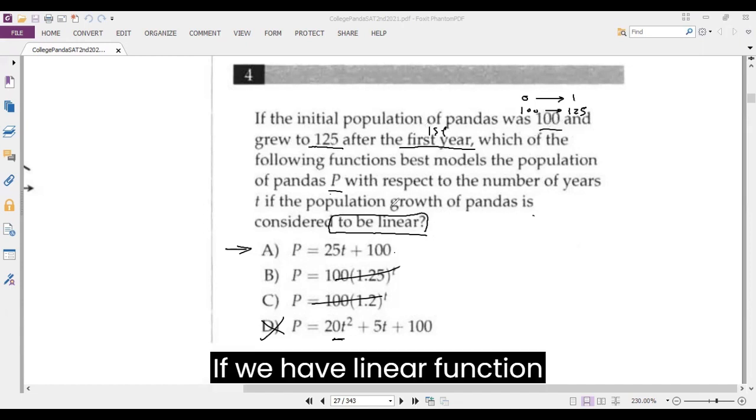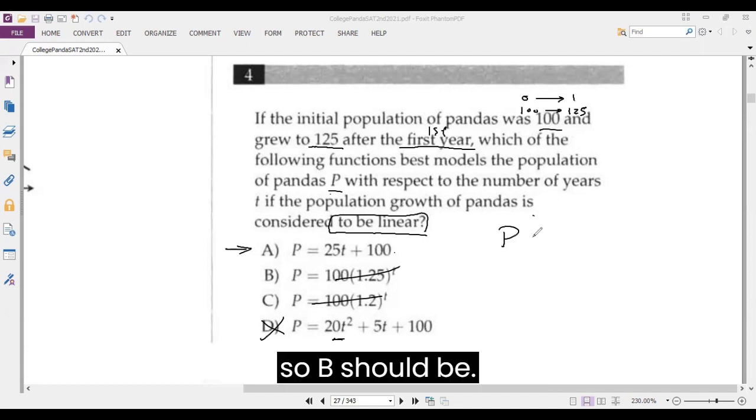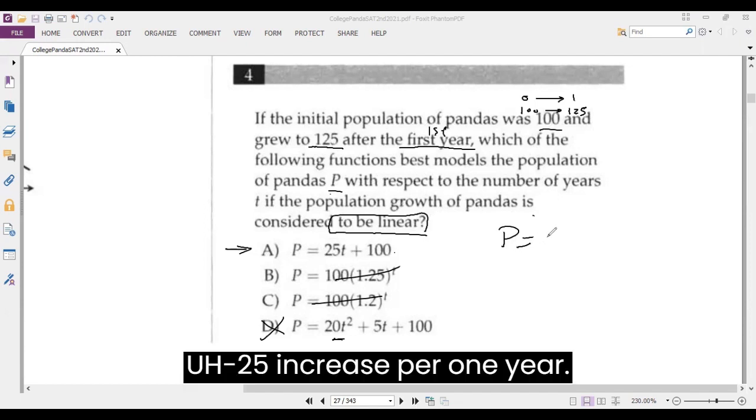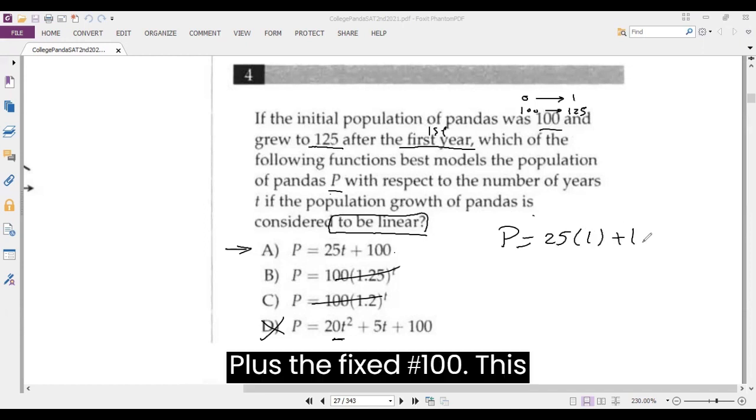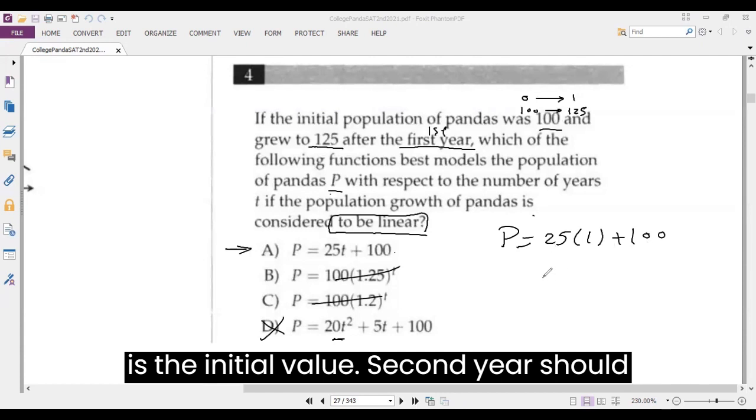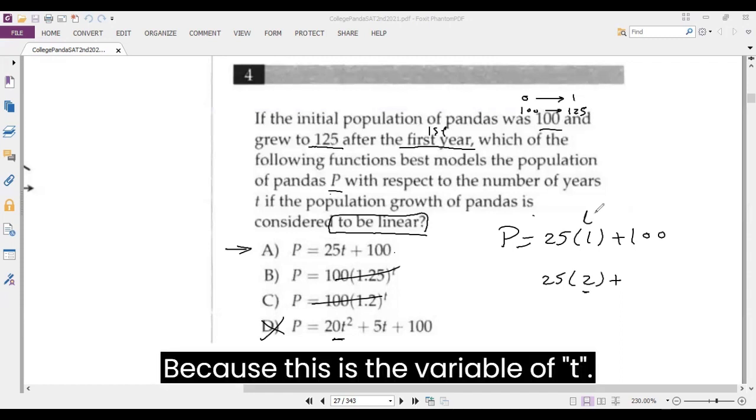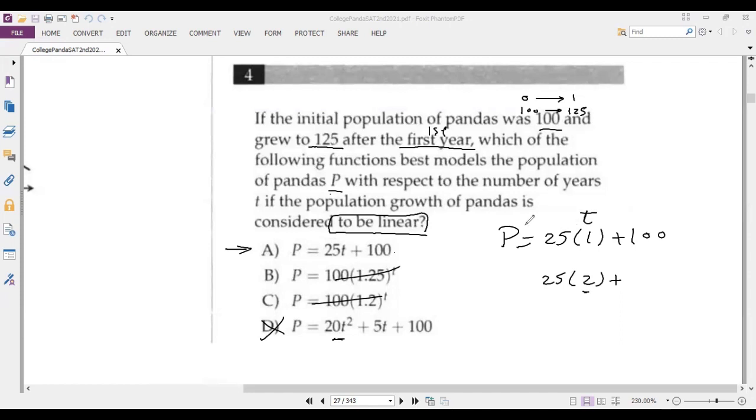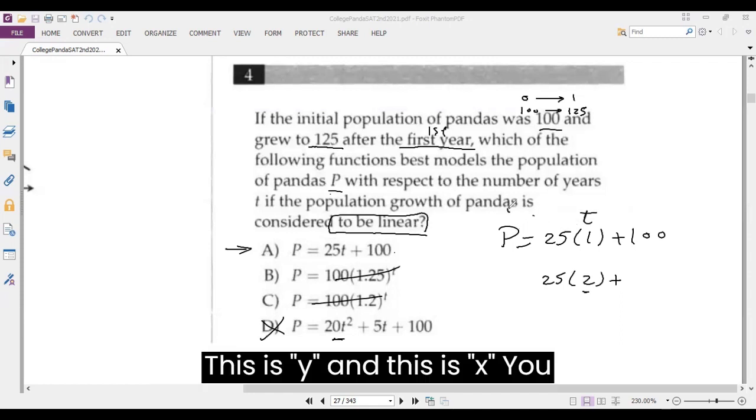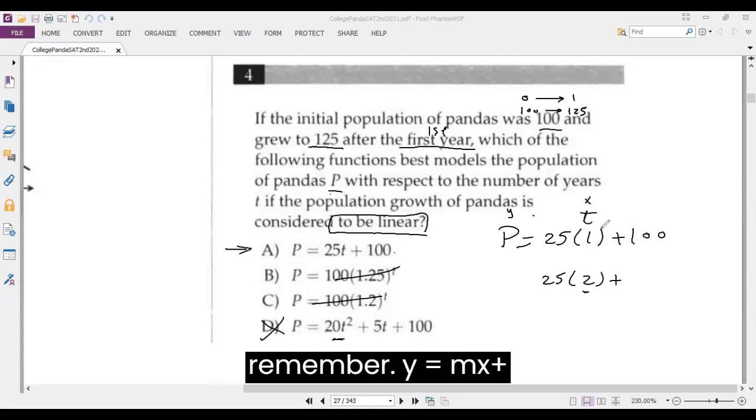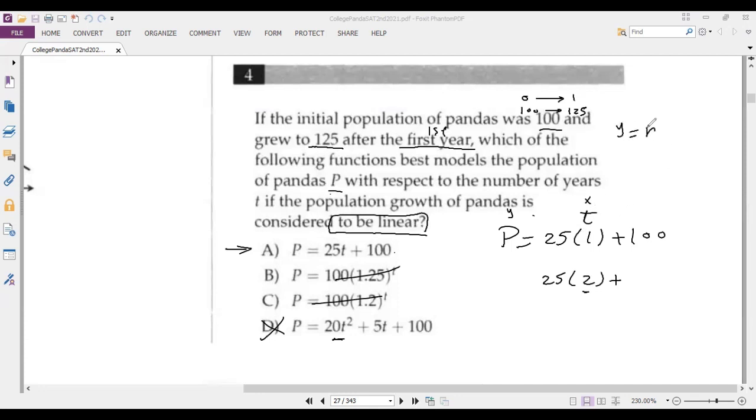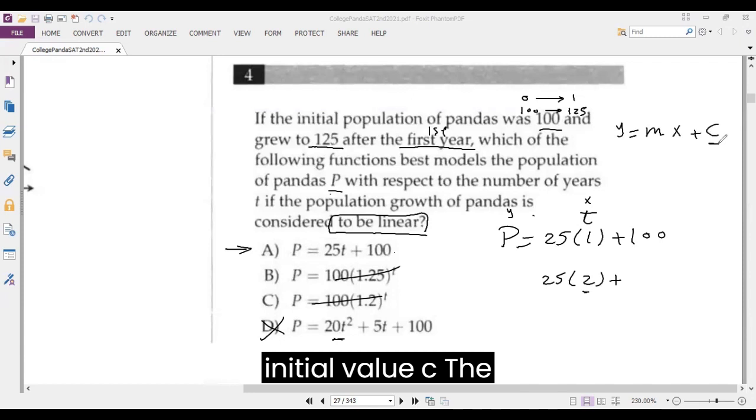If we have linear function, so P should be 25 increase per one year plus the fixed number 100. This is the initial value. Second year should look like this, two years, because this is the variable of T. This is Y and this is X, you remember? Y equals MX plus initial value C.